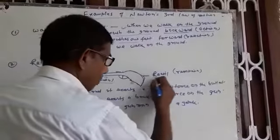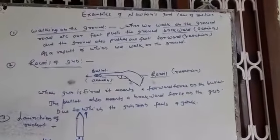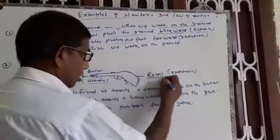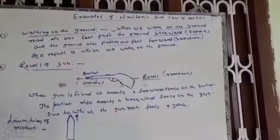The backward movement of the gun is known as recoil. And the velocity with which the gun comes back is known as recoil velocity, which is popularly known as recoil of gun.